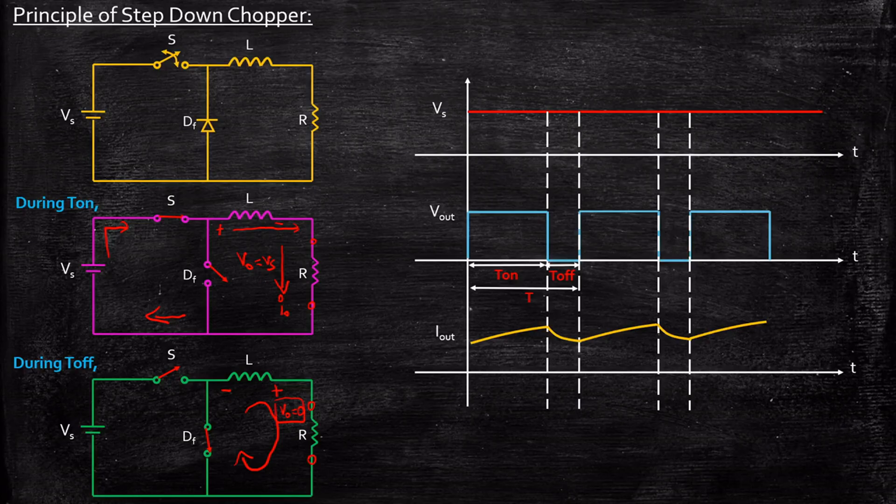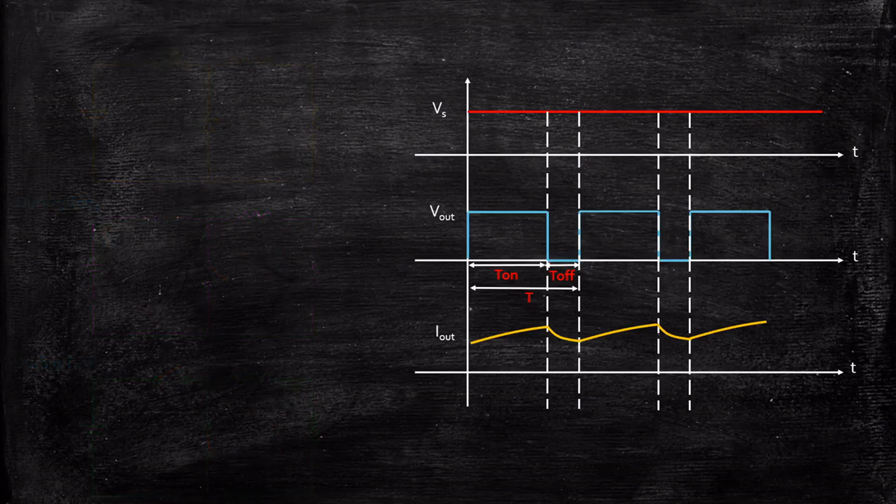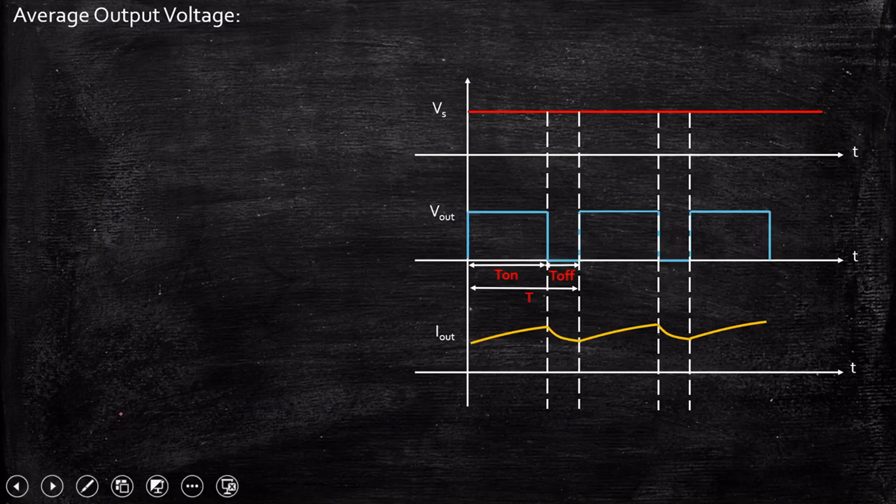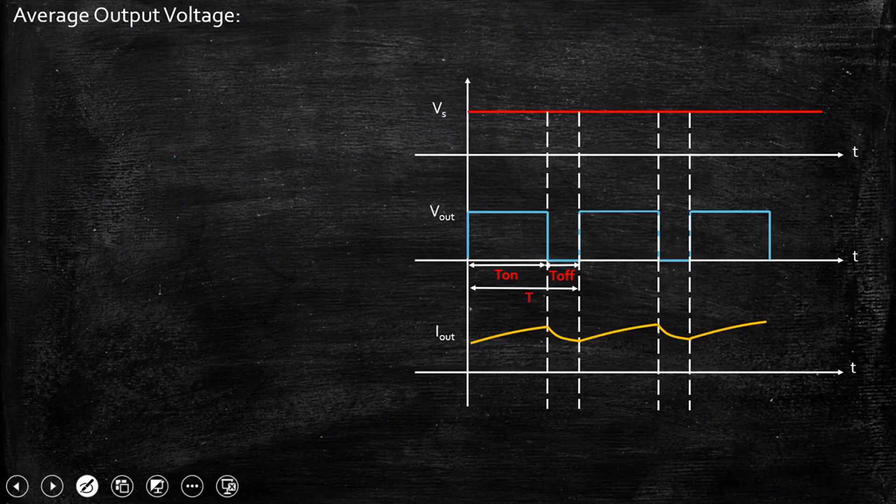Now, we have seen the analysis, basically the principle of how a step-down chopper works. Now, let's take a look at some important expressions that we need to derive. What is the average output voltage? The logic behind deriving this expression is similar to that what we did in the rectifier circuits. Similar to that, we will be finding out the average output voltage. Let's find out Vout.